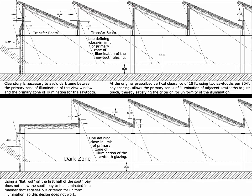In this particular problem, students were asked to generate an aperture that's 20% of the floor area being illuminated. The spacing of the apertures also has to be determined so that there's an overlap of the primary area of illumination from each aperture. Students are then asked to look at alternate solutions where a sawtooth at the south end of the building gets replaced with a flat roof, and they discover that without the sawtooth there's no overlap of the primary daylighting zone — creating a dark zone that does not meet the criterion for uniformity of daylight.